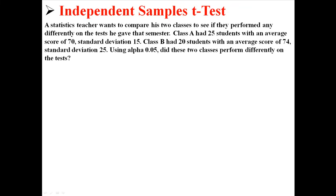Class A had 25 students with an average score of 70, standard deviation 15. Class B had 20 students with an average score of 74, standard deviation 25. Using alpha level of 0.05, did these two classes perform any differently on the tests?